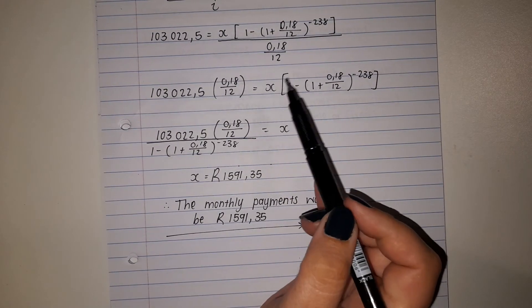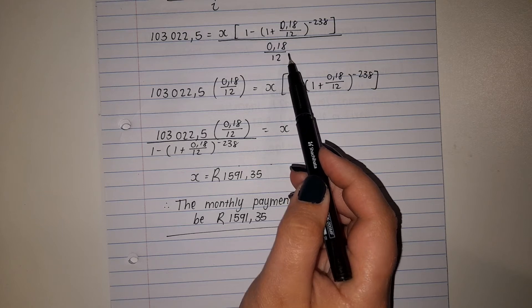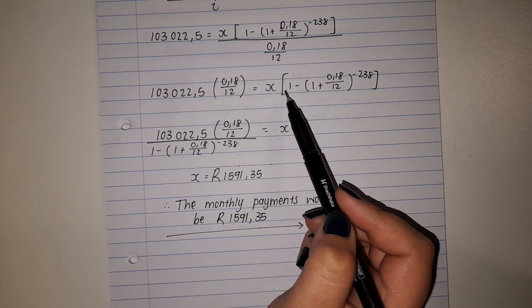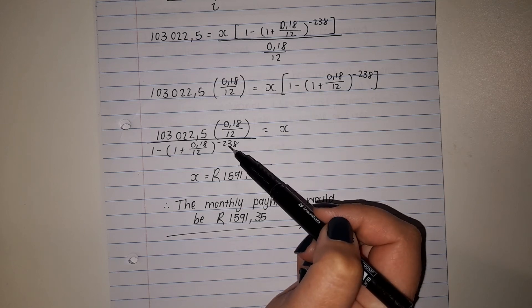Okay, so again, I want to get my x alone. Here's a divide, what's opposite of divide? Times, times on the other side. When I get x alone, here's a times, what's opposite of times? Divide. So I divide on the other side.